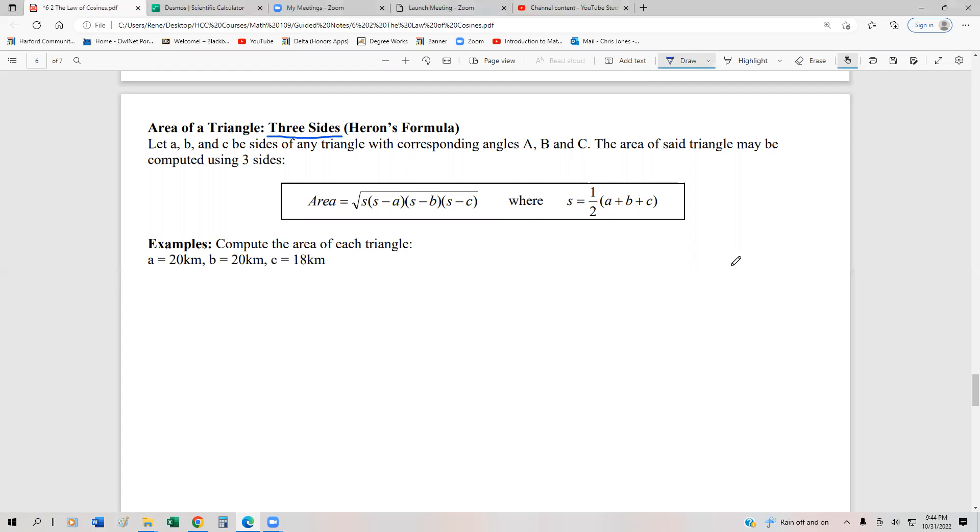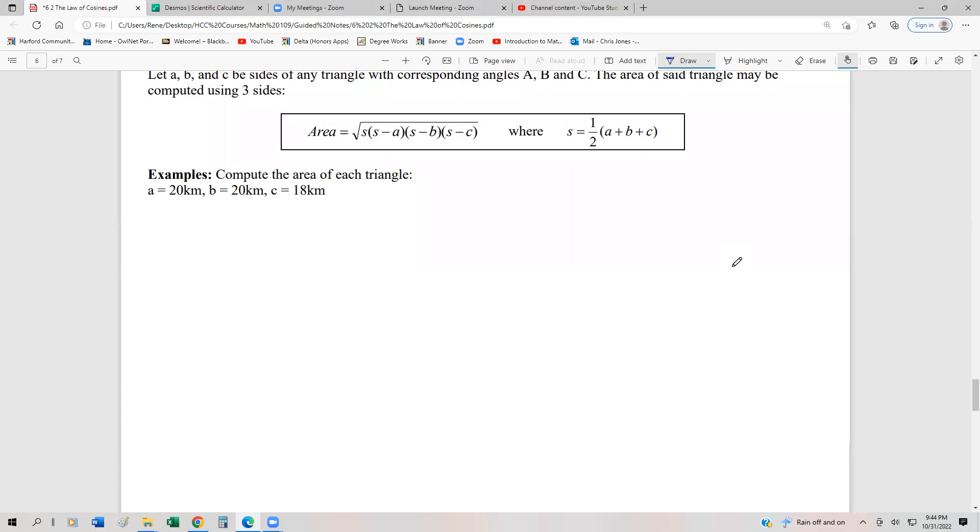It's actually pretty easy to do this, just a straightforward computational problem. So we have A and B are both 20, C is 18. When we're doing this, the first thing we want to do is find what S is.